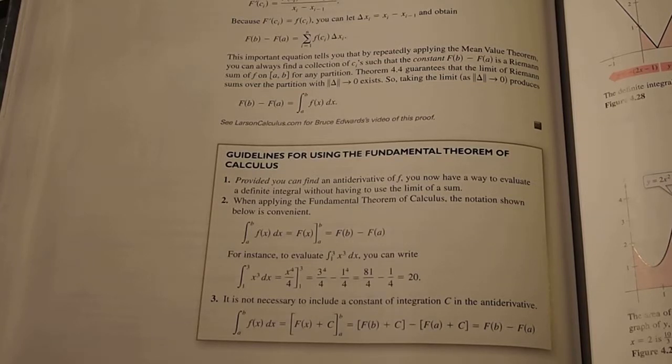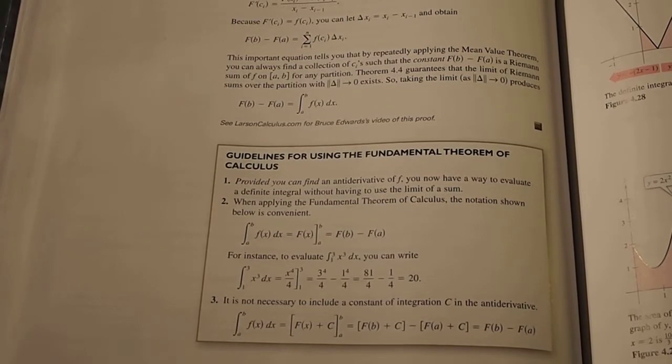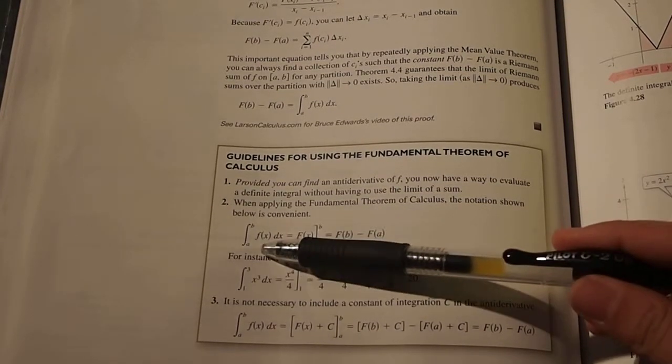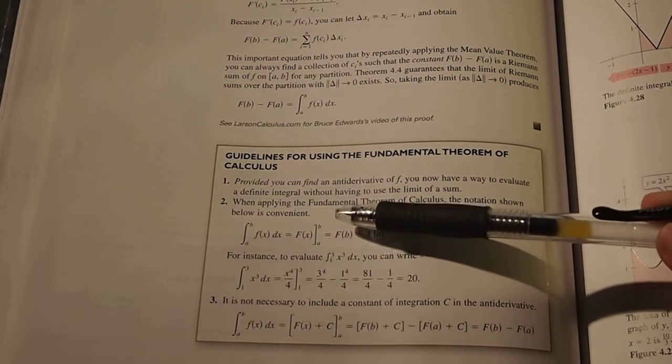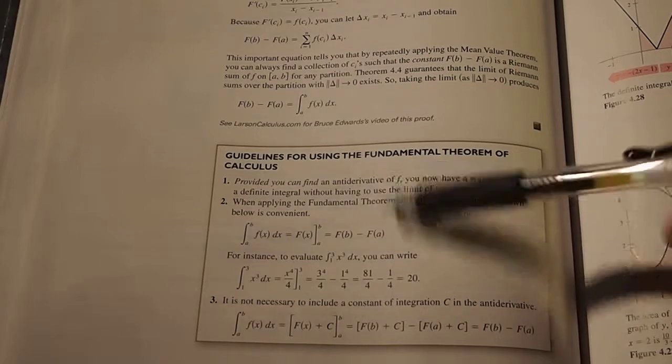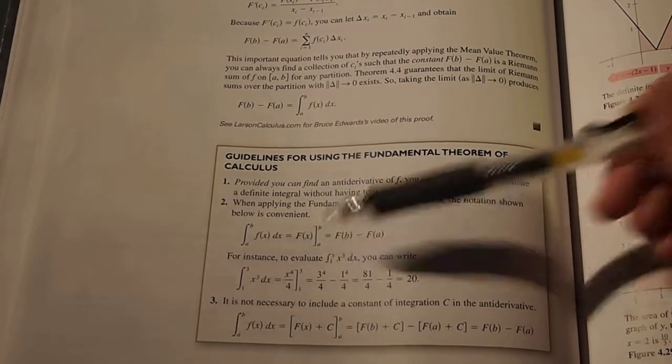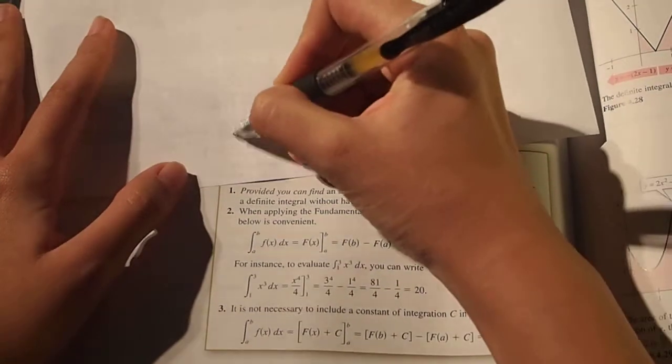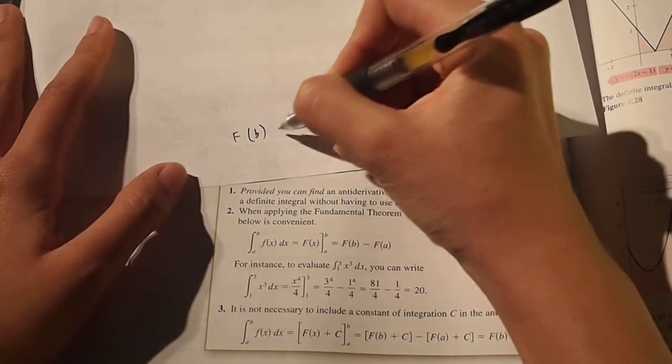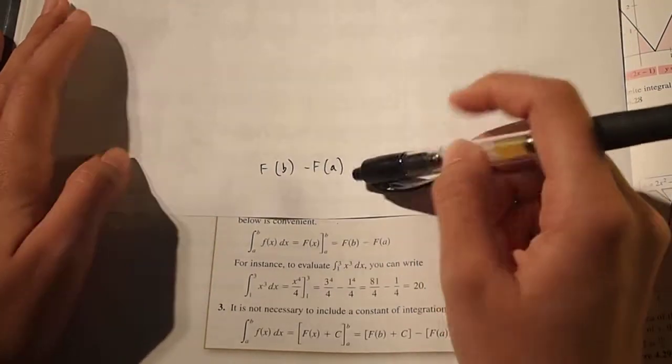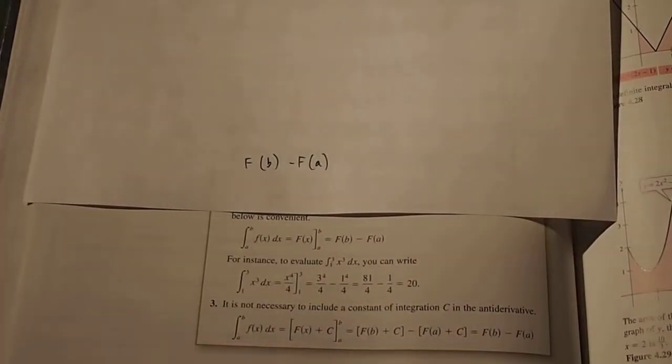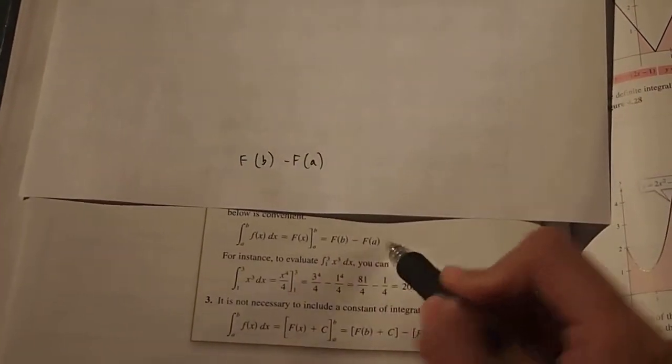Second, when applying the fundamental theorem of calculus, the notation shown below is convenient, and the notation shown below is the integral from a to b of f(x)dx equals the anti-derivative of f(x), and then from a to b. And this notation basically is the same thing as just saying f(b) minus f(a), and that's shown right next to it.